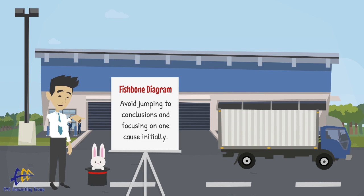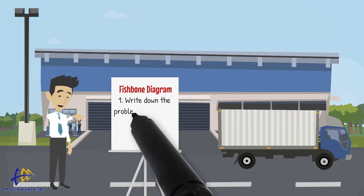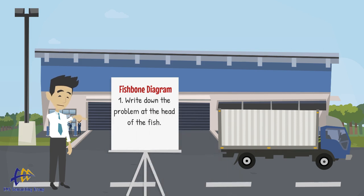To utilize a fishbone diagram we must first define the problem correctly. At the head of the fish we write down the problem — this is called the effect.